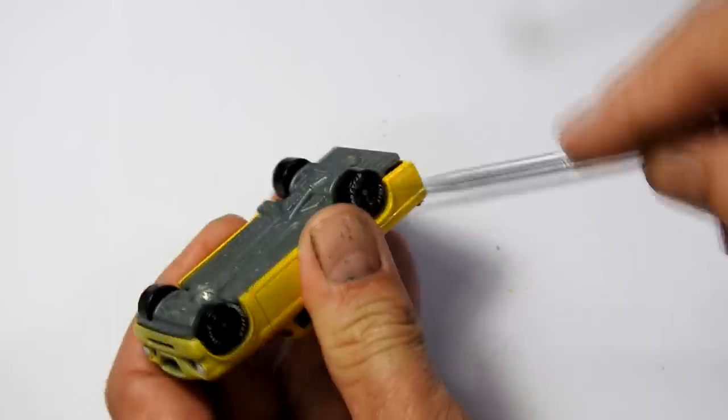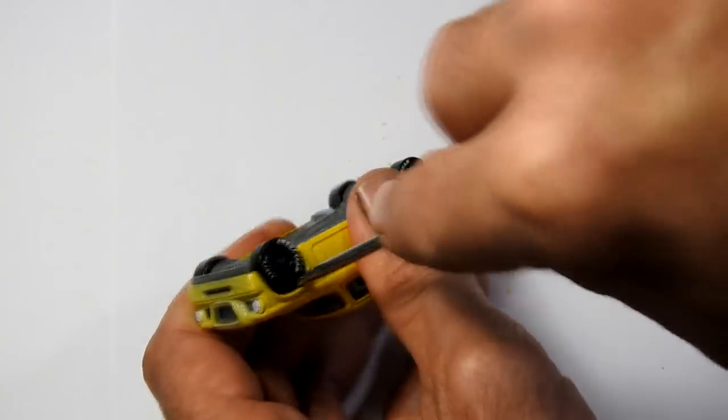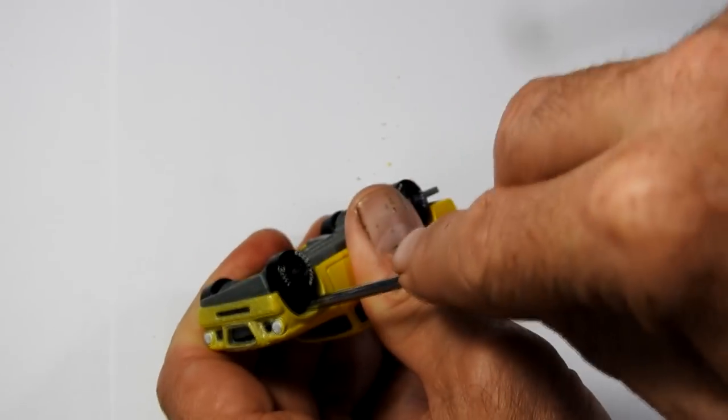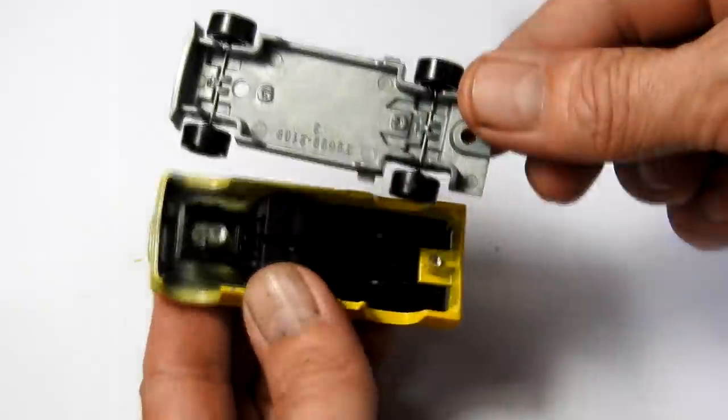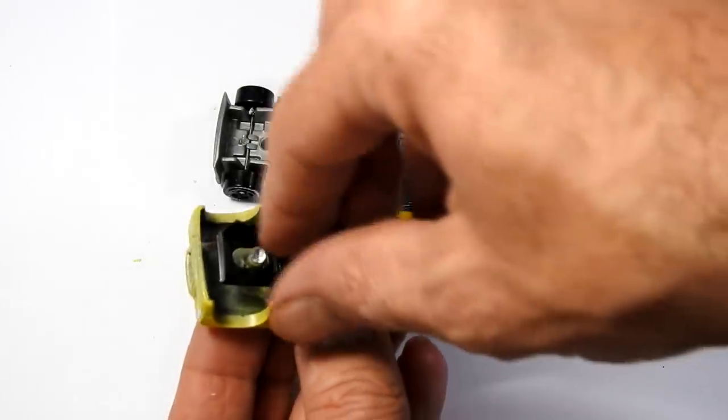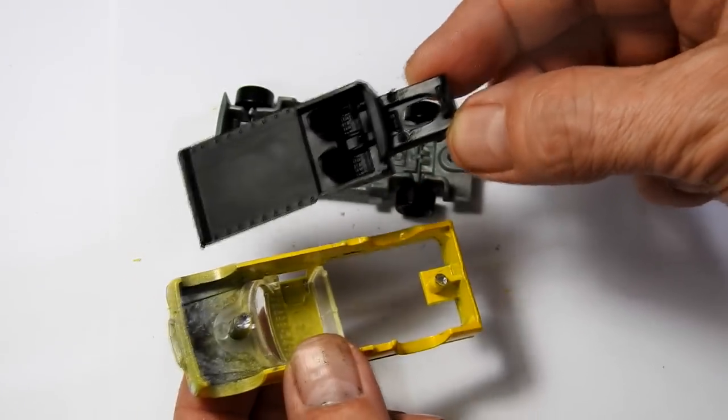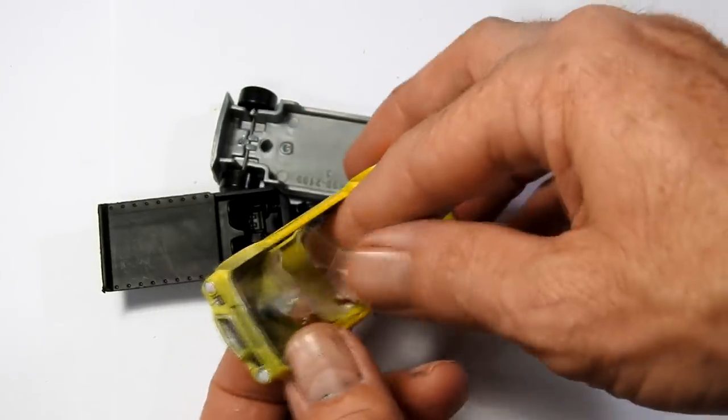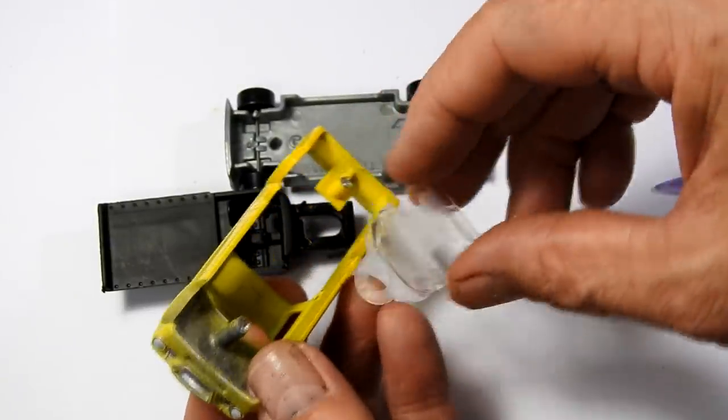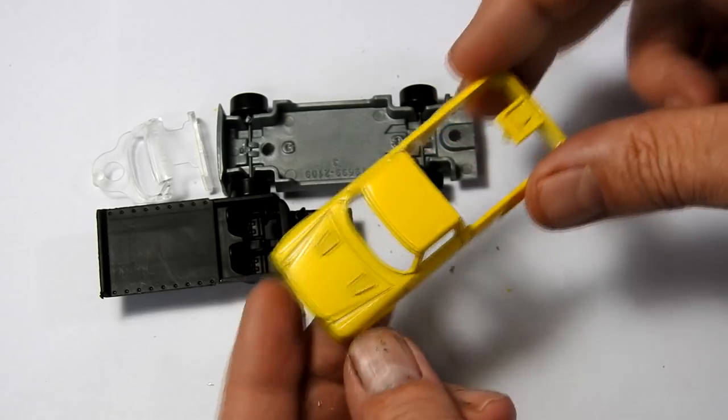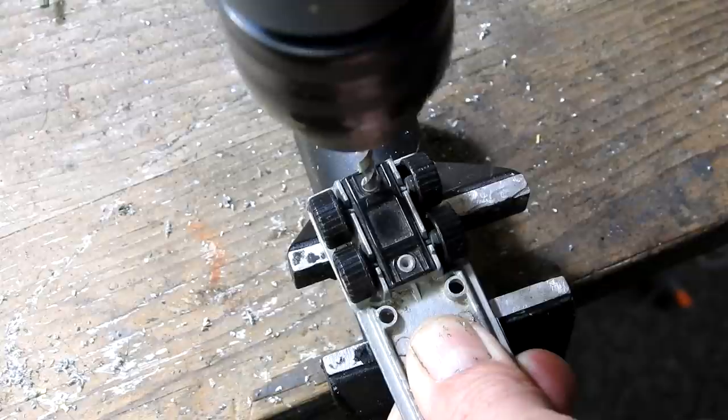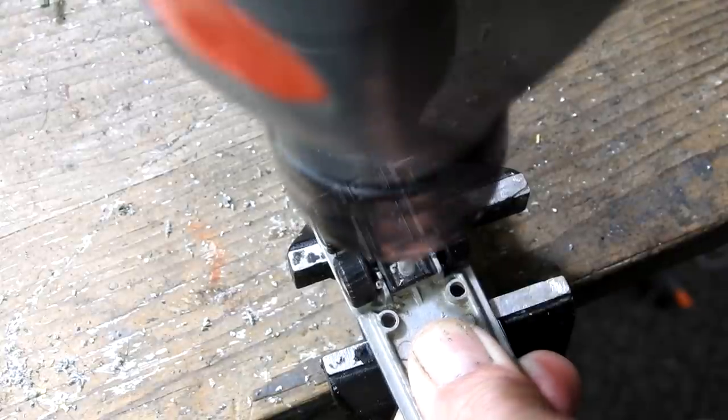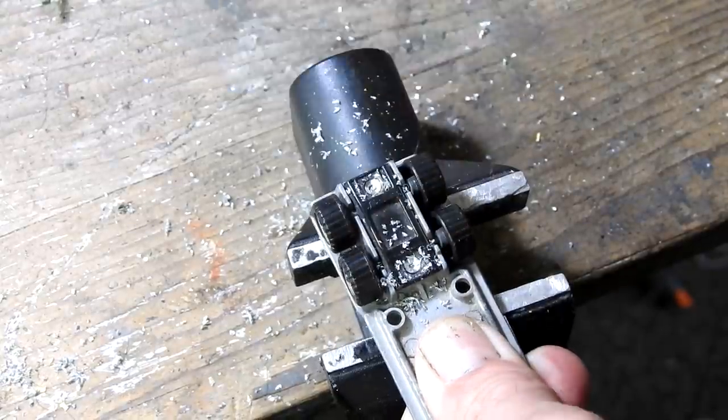Okay so I'm starting out taking apart this Hot Wheels Studebaker Champ. Hot Wheels have been making this model since 2011. I've just drilled out the posts there and then I can take it all apart. I'll do the same with the trailer. It's just two rivets holding the wheels on.